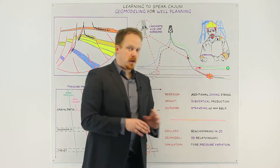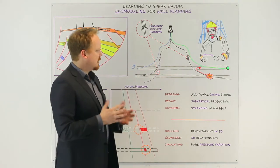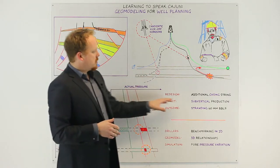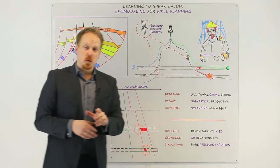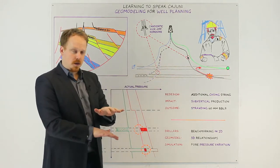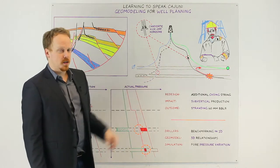We were just post Macondo so everyone was very sensitive around our drilling parameters. We didn't want to have anything going wrong even more than normal and so what they wanted to do was redesign with an additional casing string that would have required us to case between the two units that are quite close together, preventing us then from being able to get a horizontal section into the target reservoir.